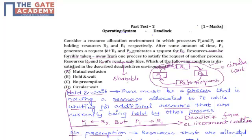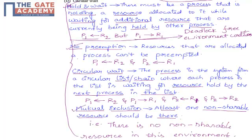From this question, what we learned: what is meant by hold and wait, what is meant by no preemption, what is meant by circular wait, and what is meant by mutual exclusion. We also learned that all these conditions are deadlock-free environment conditions. Thank you.